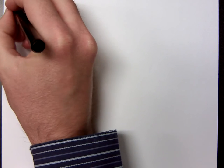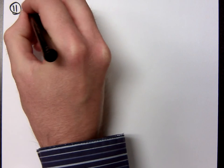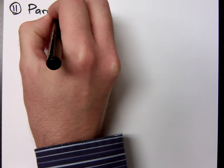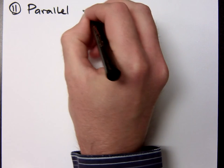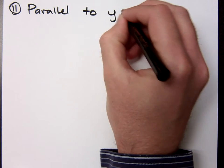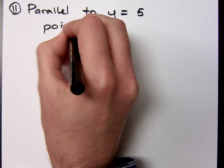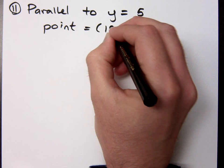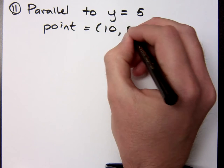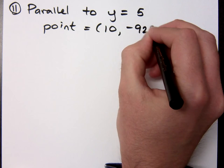So, let's do this guy. Suppose I want it to be parallel to y equals 5, and the point that I'm going to pass through is 10, negative 92.